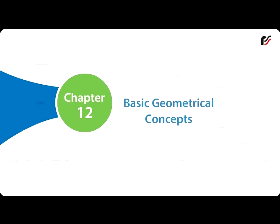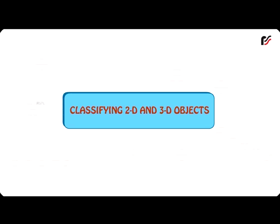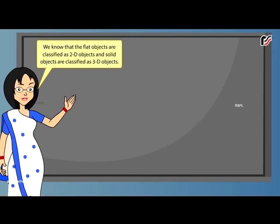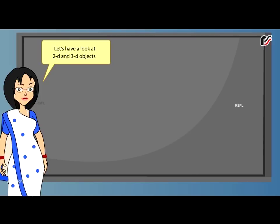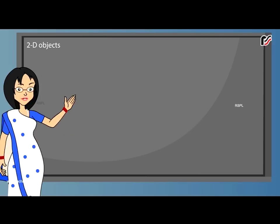Chapter 12 Basic Geometrical Concepts: Classifying 2D and 3D Objects. We know that flat objects are classified as 2D objects and solid objects are classified as 3D objects. Let's have a look at 2D and 3D objects.